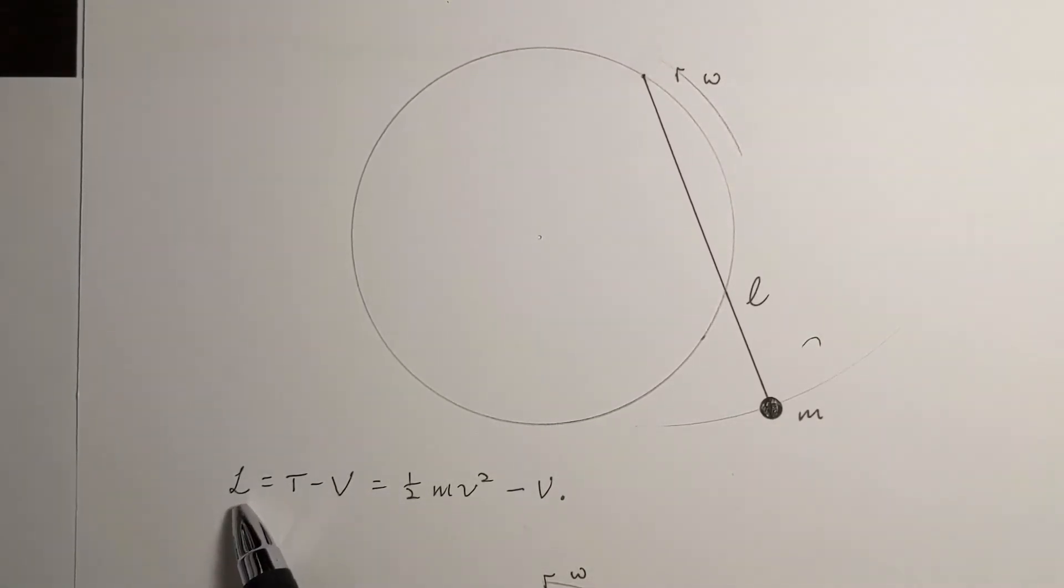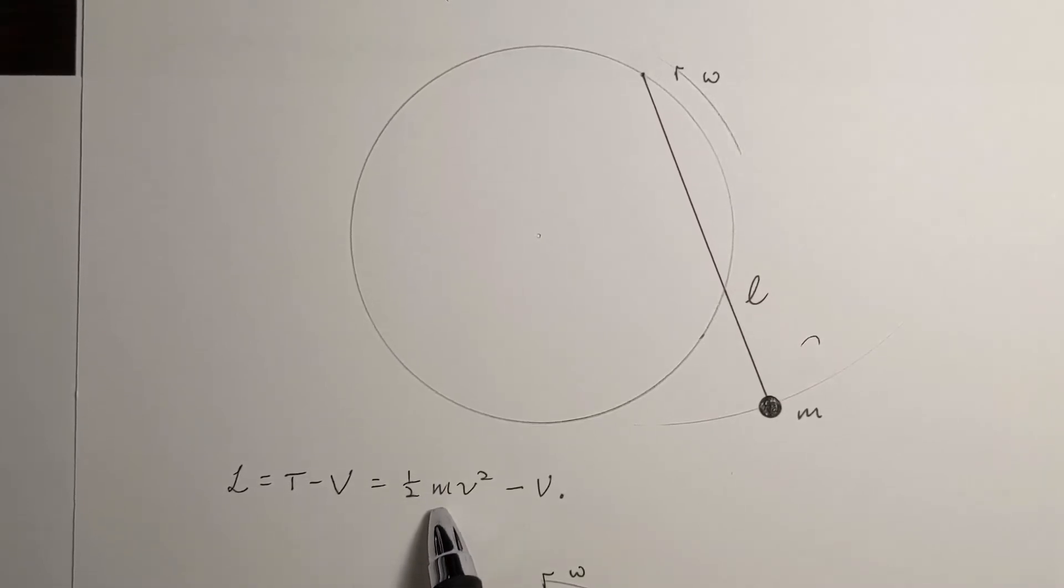So the Lagrangian, by definition, is kinetic minus potential. Here's my equation for my kinetic energy, and my potential here, which I have not really defined with any form, is really just going to be gravitational potential energy, which is going to be MgR, where R is some height.